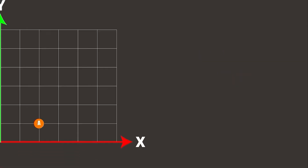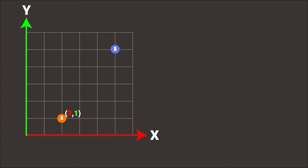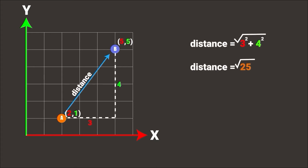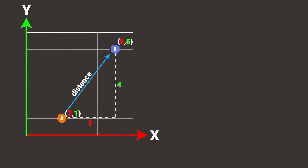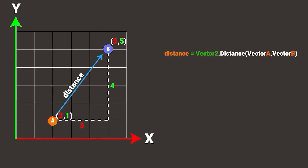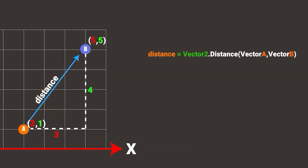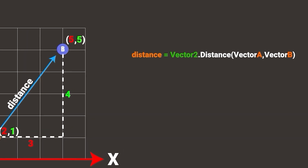Let's calculate the distance between two vectors. But we are not going to calculate that way manually — we will calculate it automatically using this code on Unity.